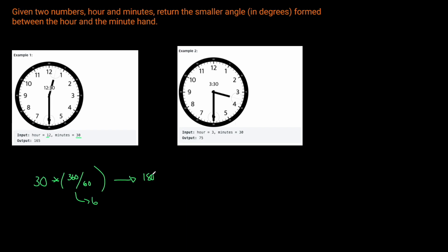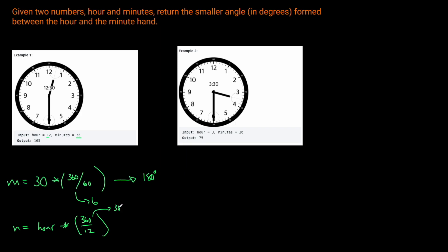Now for the hour hand, its degrees is going to be a little bit more complicated. Not only do we have to account for the base position of the hour, we need to also account for how far it is to the next hour relative to the minute hand. So we're going to calculate the base degrees for the hour, which is going to be the hour times 360 divided by 12 — that's 30 degrees per hour marker. Then we add 30 times minutes over 60, which accounts for how far the hour hand has moved between the current and next hour based on where the minute hand is.